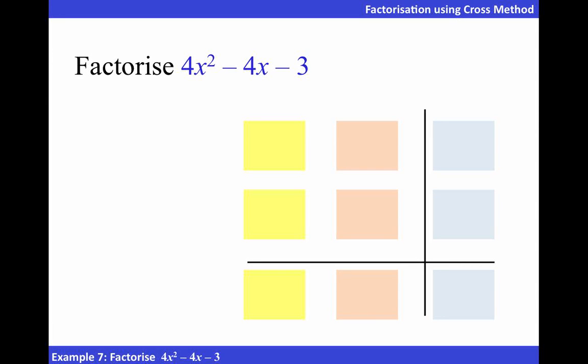Let's factorize the following using cross method. First of all, let's look at the coefficients of x squared. There are two possible pairs.